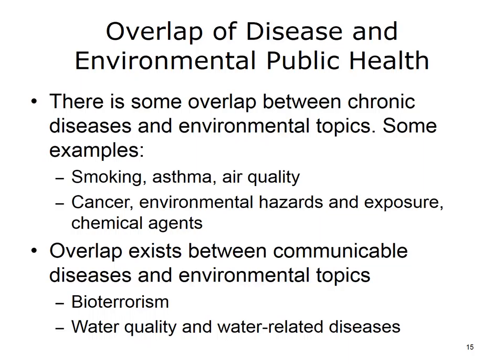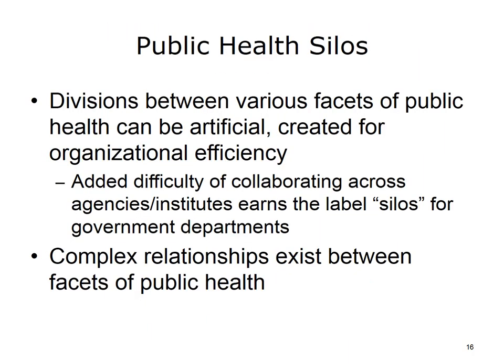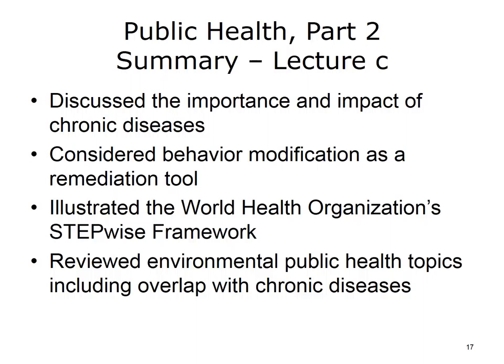Chronic diseases and environmental hazards actually demonstrate some public health overlap. Consider the interrelatedness of smoking, asthma, and air quality. Another example of interrelatedness involves cancer, environmental hazards and exposure, and chemical agents. Communicable diseases also overlap with environmental topics, such as the relationships between water quality and water-related diseases. In fact, divisions between different facets of public health can be artificial, created for organizational purposes. The relationships between different facets of public health are often complex, as illustrated in the previous examples.